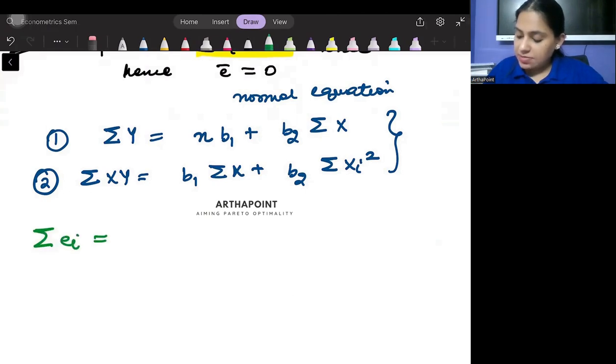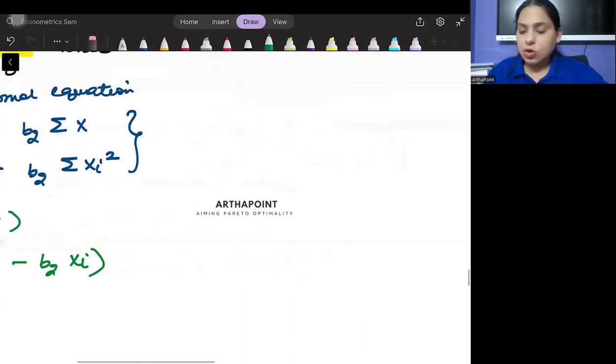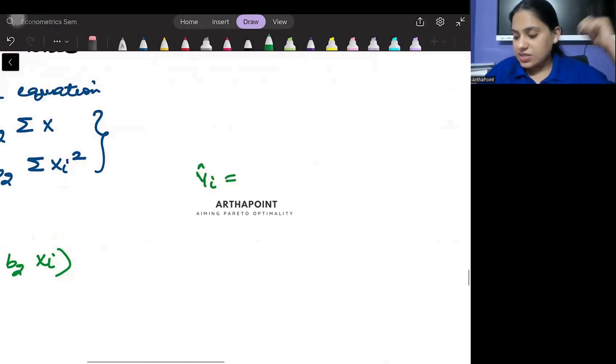So summation yi minus b1 minus b2 xi, because we know that yi hat is nothing but b1 plus b2 xi. So we can go ahead and we can write it like that.